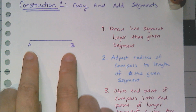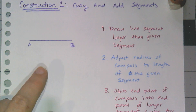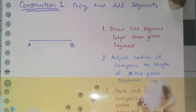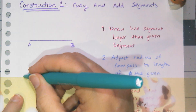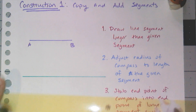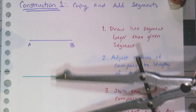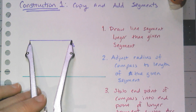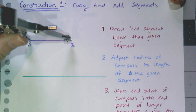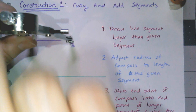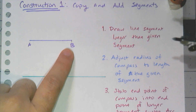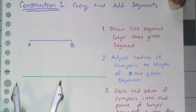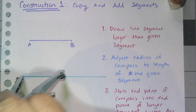We're going to start with a given line segment. In order to do the construction, you first have to draw a line segment that is longer than the one you've been given. Now I get my compass and I need to adjust it so that the radius I'm going to use is the length of that line segment. The best way to do that is to put your compass on one endpoint and then swing a little arc to make sure that you hit that other endpoint. Then to copy this segment, you put your compass on the endpoint of the line segment you drew and swing an arc.